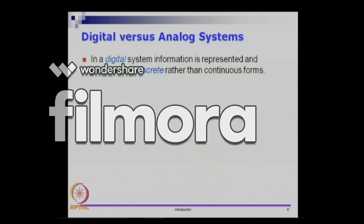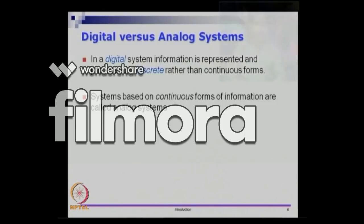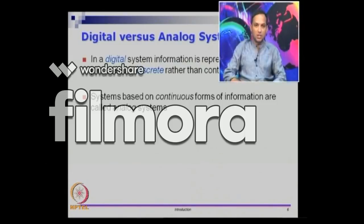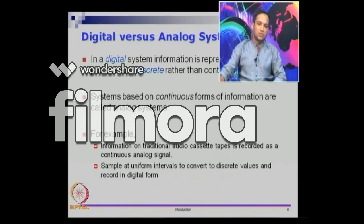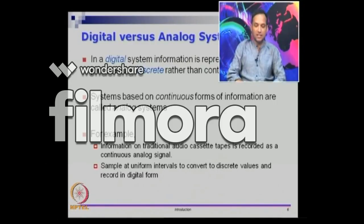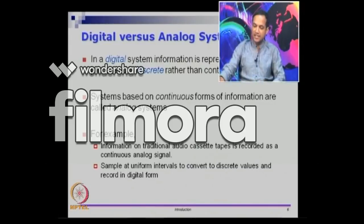We will see several other forms of discretization as we go along. Analog systems are usually based on continuous forms — there is something continuously happening in an analog system. For example, audio cassettes — probably you have seen this, some of you may have used it — are a classical example of an analog system. They record a continuous analog signal; you can, however, take this continuous analog signal and sample it at regular intervals to get discrete forms.